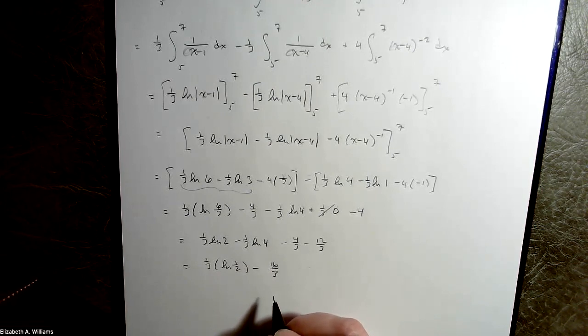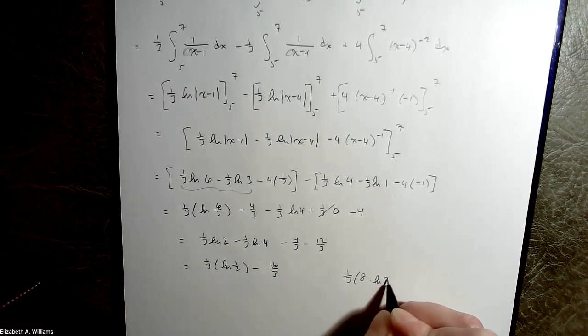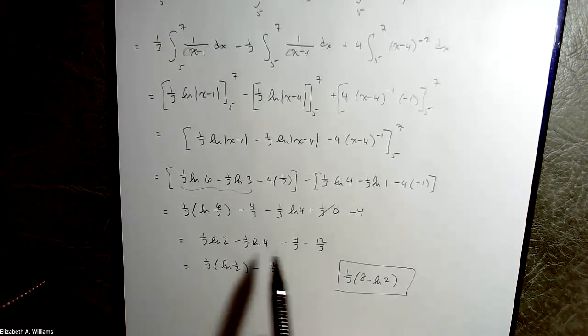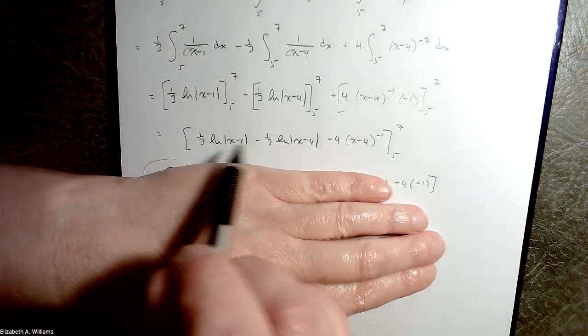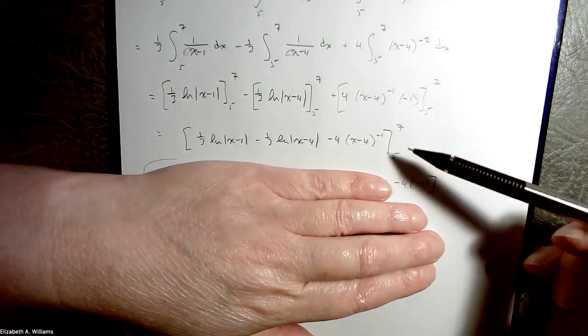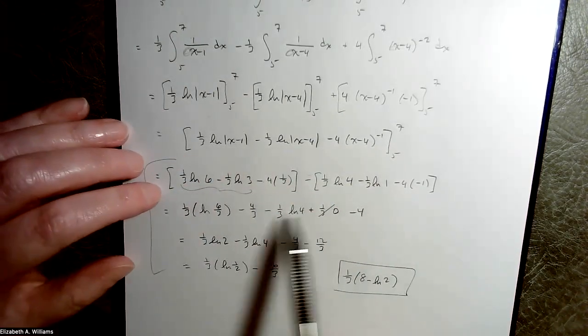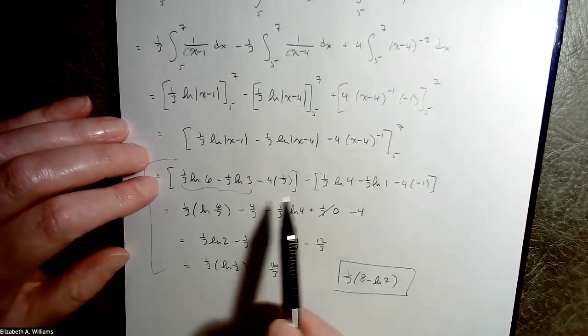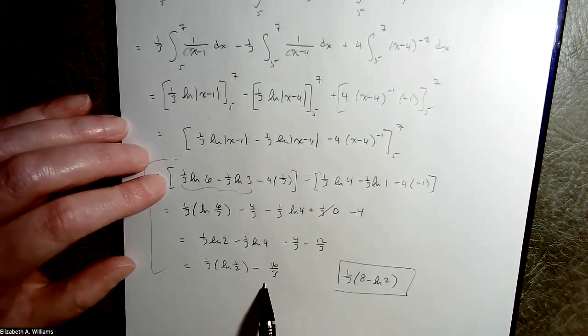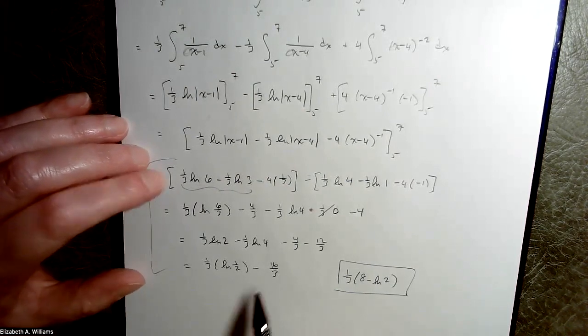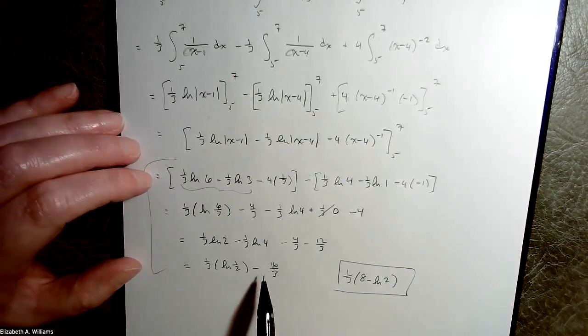You should be writing this down and pausing the video and checking for yourself that I'm doing it right. So at the end of the day, you have 1/3 natural log of 2 minus 1/3 natural log of 4 minus 4/3 minus 4, which is minus 4/3 minus 12/3. So you should have factorized out the 1/3, 1/2 minus 16/3.